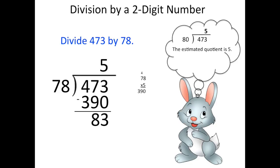Now we have a number that's greater than 78. 83 is greater than 78. So that means that we could have fit one more group of 78 into 473. So the quotient 5 is too small.